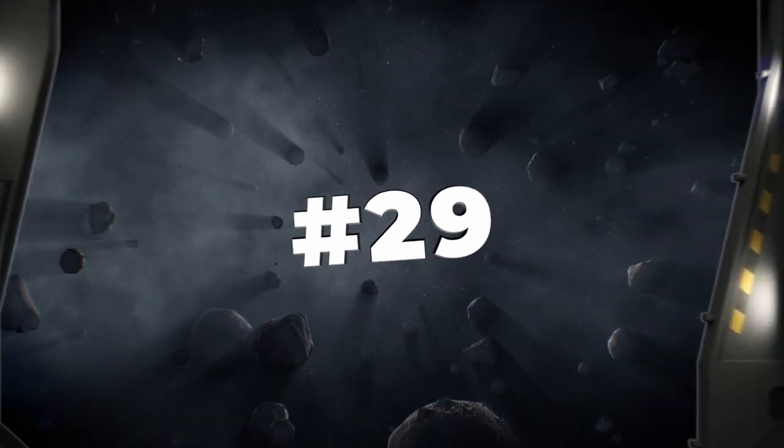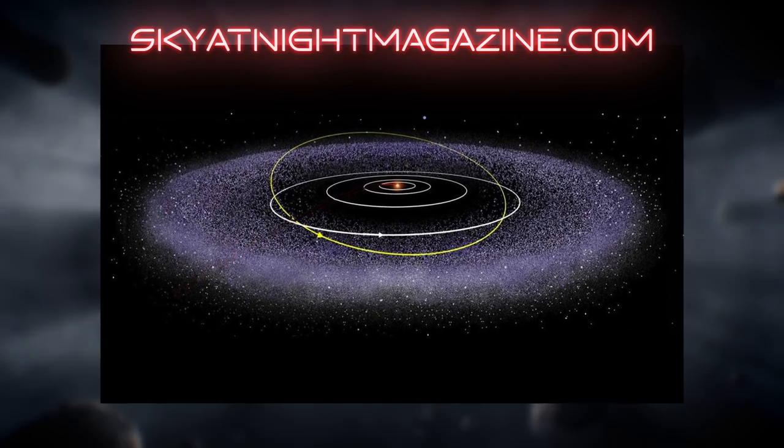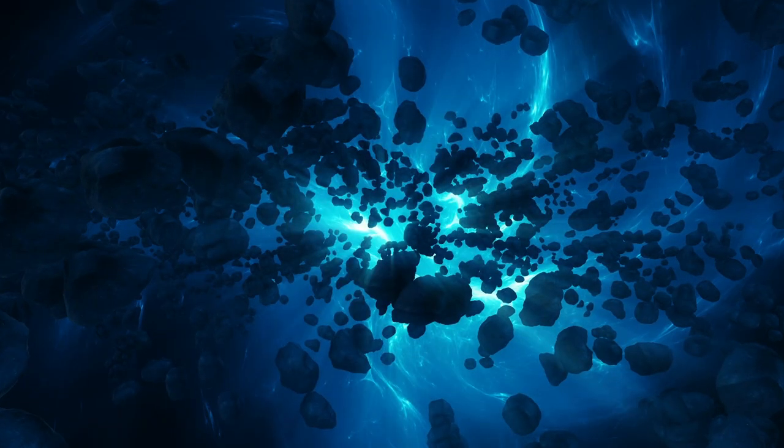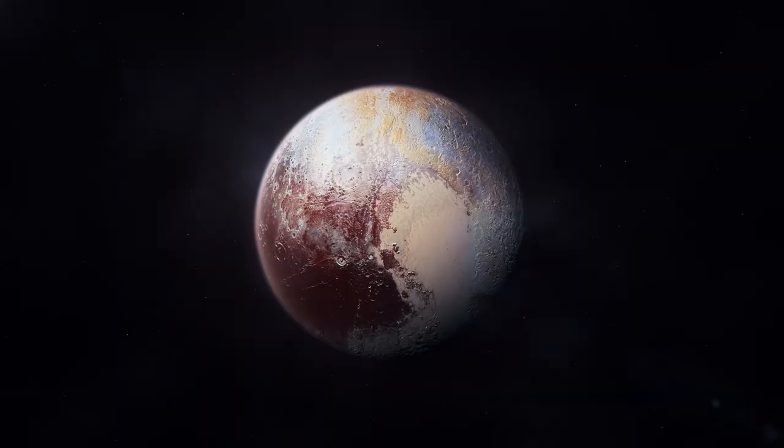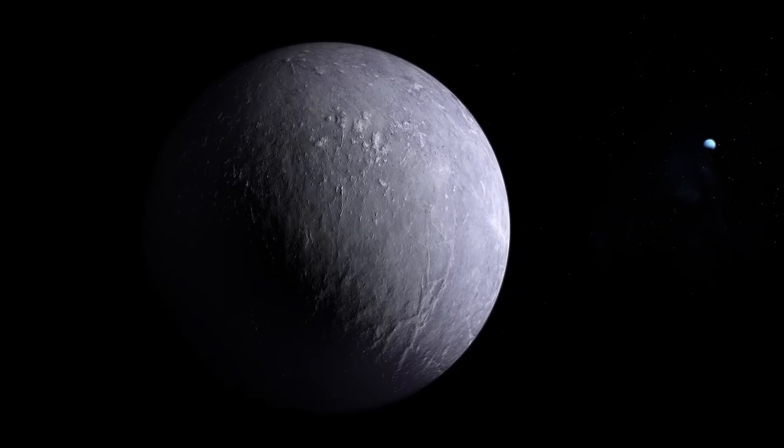Number 29. The Kuiper belt is a region of the outer solar system beyond Neptune that's home to numerous small bodies, including dwarf planets, asteroids, and icy objects. Some of the most notable ones are Pluto, Eris, Makemake, Haumea, Orcus, and Varuna.